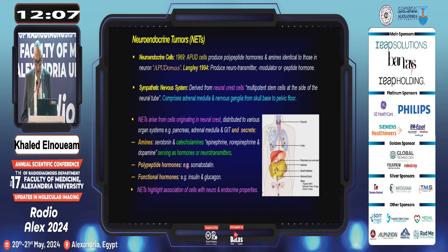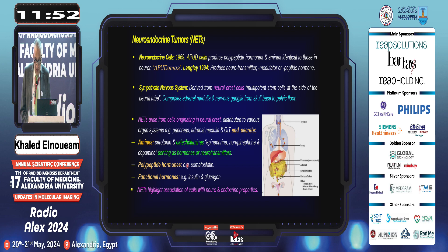The amines produced act as hormones (endocrine function) and neurotransmitters (neurological function), hence the term neuroendocrine tumors highlights the association between neural and endocrine properties. The amines include serotonin and catecholamines — namely epinephrine, norepinephrine, and dopamine. Polypeptide hormones are also secreted, like somatostatin, and functional hormones particularly in the gastrointestinal tract, including insulin and glucagon.